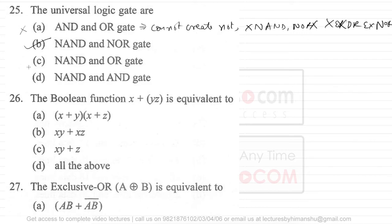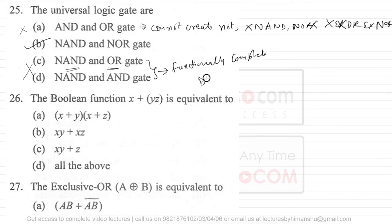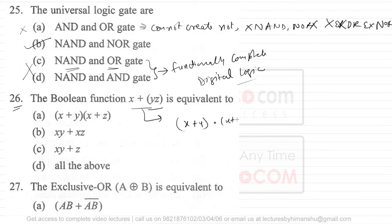Combinations like NAND and OR, or NAND and AND, are not universal gates because you cannot create all possible gate combinations from them. For more detail, refer to the topic of functionally complete gates in digital logic. For question 26, the boolean function x + yz — applying the distributivity law: x + y · x + z — option A is the correct answer.